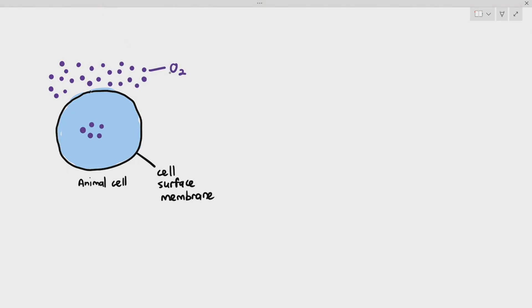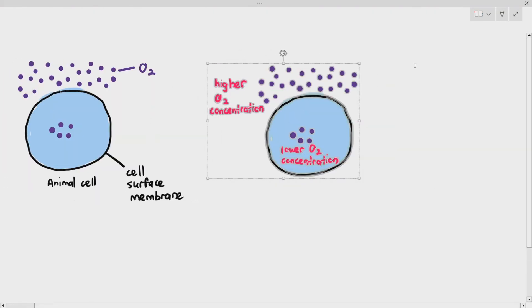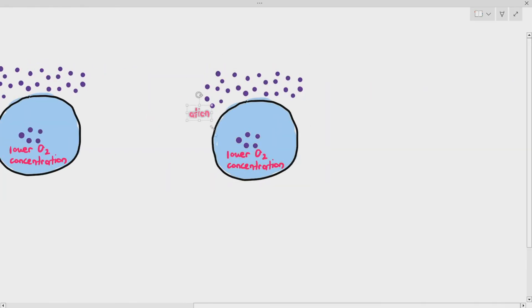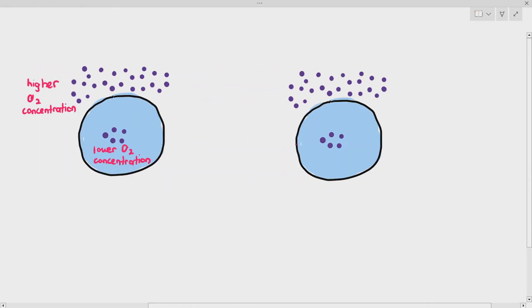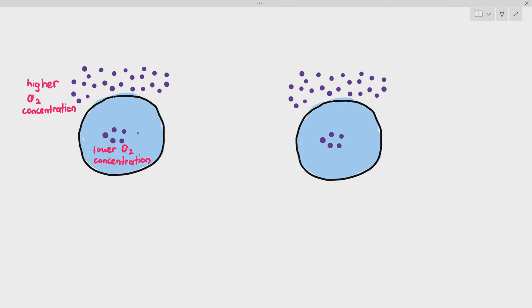The amount of oxygen outside the cell is higher than the concentration of oxygen inside the cell. So due to random motion, oxygen will automatically move down the concentration gradient.